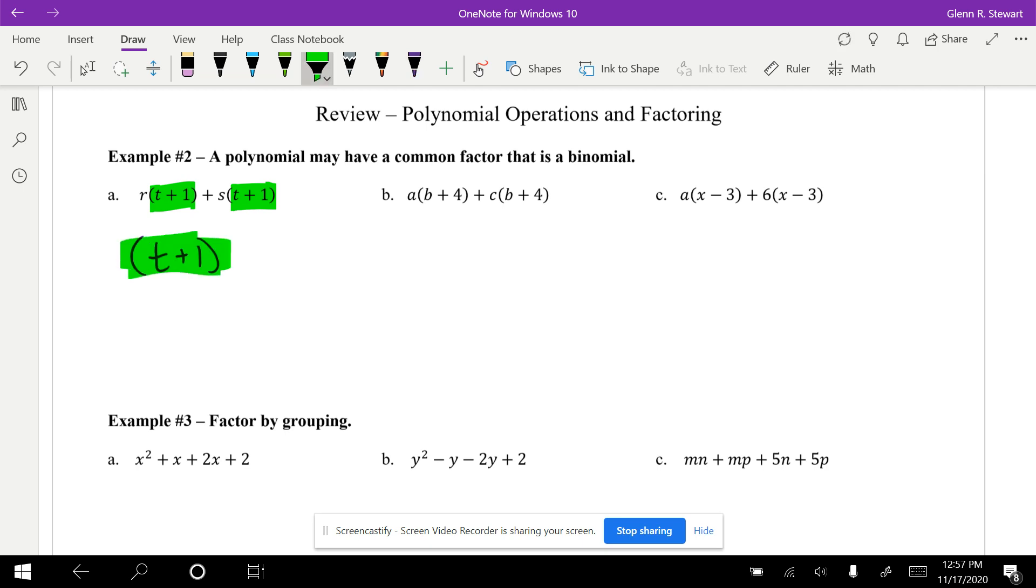That's the part that's in green, and then what we'll leave in another parenthesis is what's left over. r and s give us (r + s). We can only do this when everything in the parenthesis is the same.